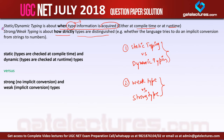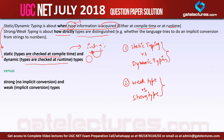Static typing means types are checked at compile time. For example, in C language, if I say integer a, the type of a will be checked at the compile time. Dynamic typing means types are checked at run time. And when I say strong typing, it means no implicit conversion; weak typing means implicit conversion is allowed.